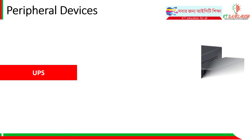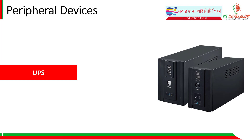A UPS (Uninterruptible Power Supply) provides backup power. If there is a power cut or short circuit, the UPS keeps the computer running safely so your data is not lost. It supplies power to the computer for a short time after the main current is cut, allowing you to safely shut down.